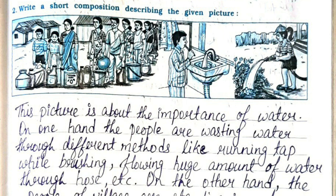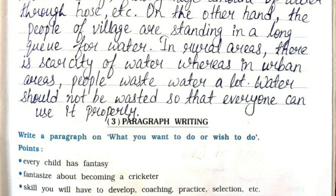Christmas is celebrated on 25th December every year. It is believed that Santa Claus comes and fulfills your wishes and gives you gifts on Christmas. It is the birthday of Jesus Christ, the God of Christians. The second picture composition is about the importance of water — on one hand people are wasting water through methods like running taps while brushing and flowing huge amounts of water through a hose, while on the other hand villagers are standing in a long queue for water. In rural areas there is scarcity of water, whereas in urban areas people waste water a lot. Water should not be wasted so everyone can use it properly.